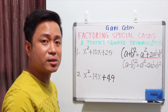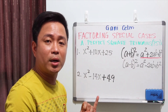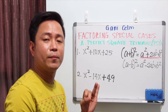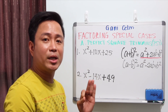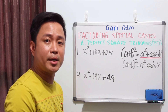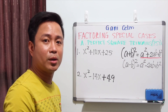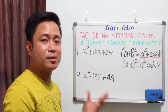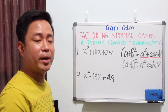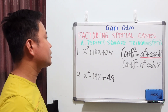So again, three things: the first term should be a perfect square, the third term should also be a perfect square, and the second term is twice the product of the first and second terms. Let's take a look at examples 1 and 2 and determine whether they're PSTs or not.